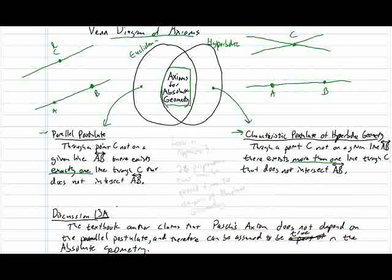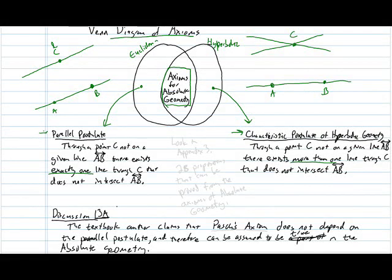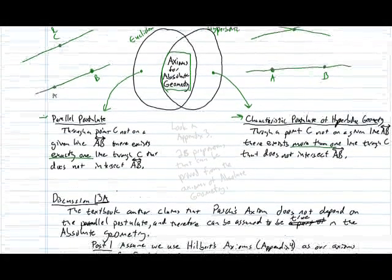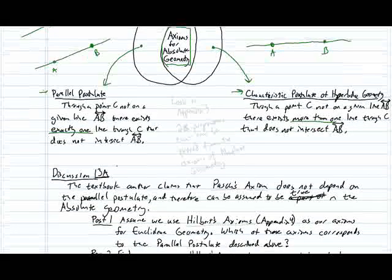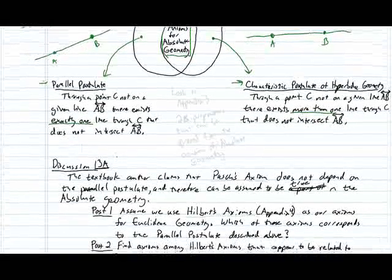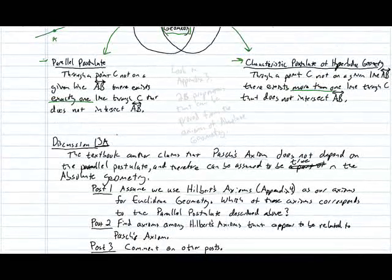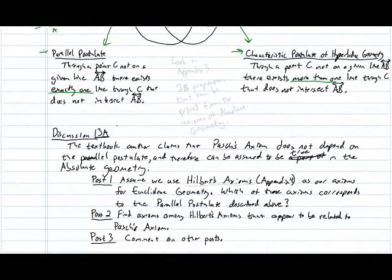Our first discussion will be about why we should think Pasha's axiom is true, given that it's not stated in any of the axiom sets. It was merely discussed in the first chapter as something true about Euclidean geometry, and the textbook author now asserts it's also true about hyperbolic geometry.